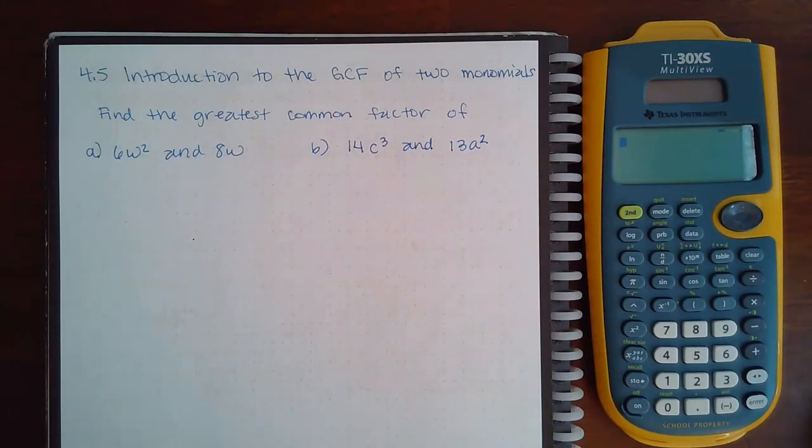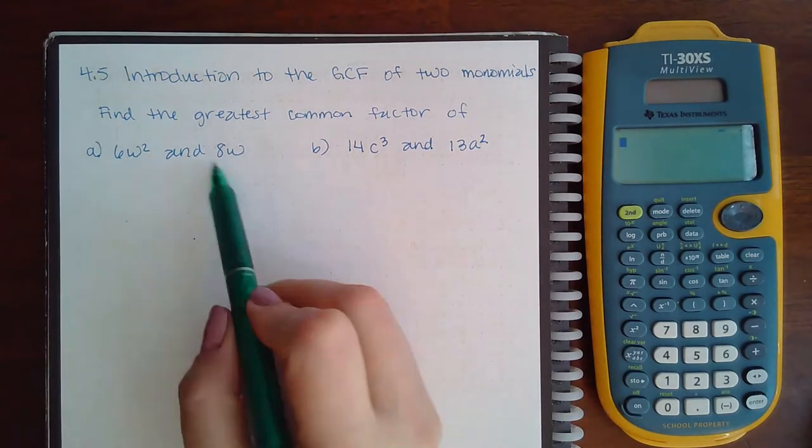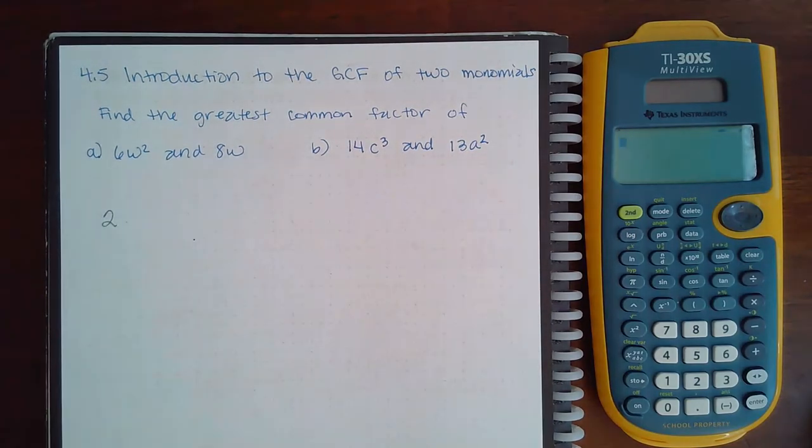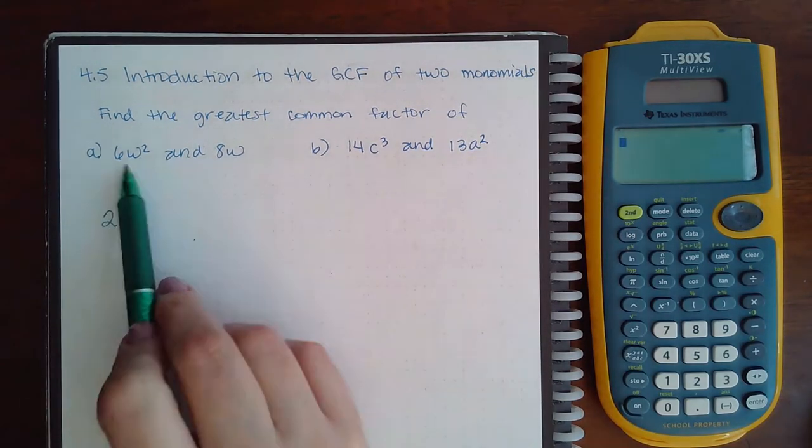Here we have an introduction to GCF with two monomials. I'm going to pick out the greatest common factor between 6 and 8, which happens to be 2, and then I also have to pick out a common factor for the variables.